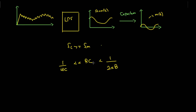If RC is too small, the capacitor will discharge rapidly and we will have more ripples at the output, which is not desirable. If RC is too large, the capacitor will take a longer time to discharge and the output will not be able to follow the envelope. Therefore, the RC time constant should be selected at an optimum value satisfying the given condition.